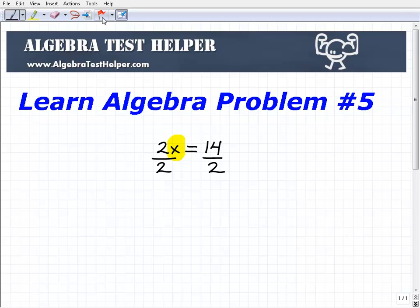Remember in algebra, this is a real key point here, is whatever you do to one side of the equation, you have to do the exact same thing to the other side of the equation. So in this case, I'm going to divide both sides of the equation by 2.